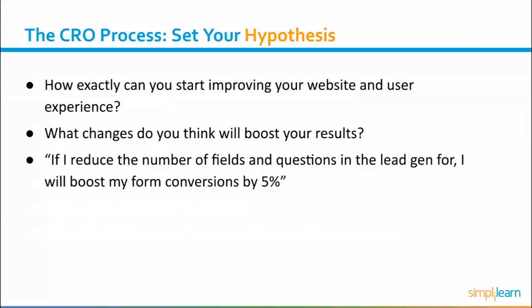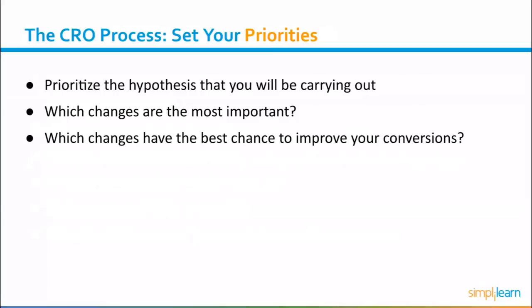The second stage is the premises stage. You know who your target audience is and what areas need improving. Now you need to come up with ideas on how exactly you can start improving. It's about listing all the different premises that you will later try out or test in order to boost your conversion. For example, a premise could be: if I reduce the number of fields and questions in the lead gen form, I will boost my form conversions by 5%. That's where testing comes in.